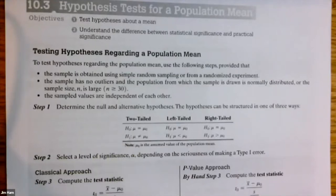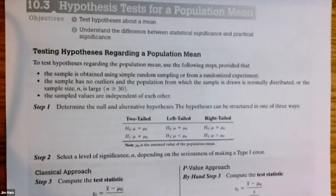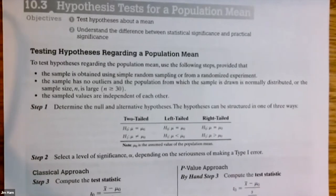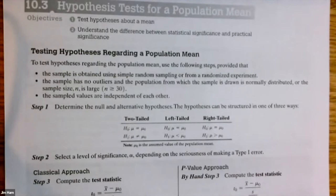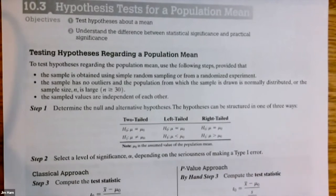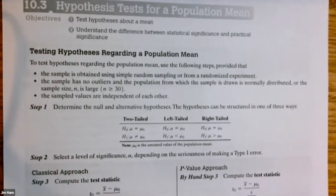Some of you will say this is hard and some will say it's easy — the only difference is that one of you figured it out and did enough work to understand it. The logic is hard: who would ever think to make an assumption we don't know is true and then try to find evidence to reject it? But that's the logic of hypothesis testing — make a claim you hope to reject. Rejecting the null hypothesis leads you to the alternative, which is sometimes called the research hypothesis.